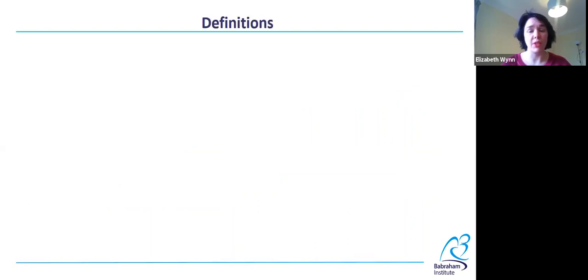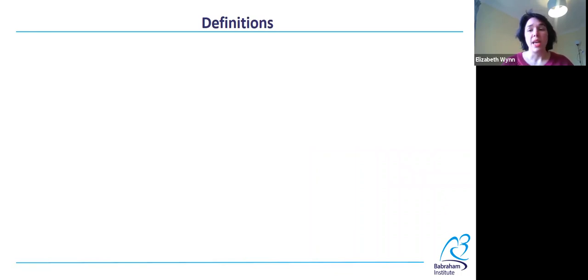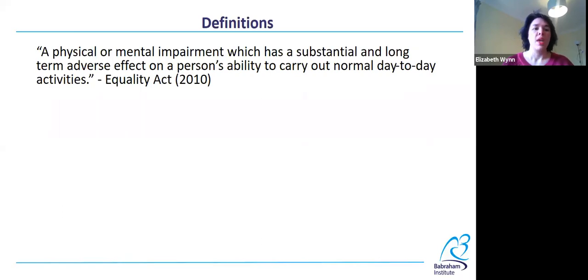Starting with definition. The relevant legislation in the UK for disability — the main piece of legislation — is the Equality Act of 2010. It defines a disability as a physical or mental impairment which has a substantial and long-term adverse effect on a person's ability to carry out normal day-to-day activities.